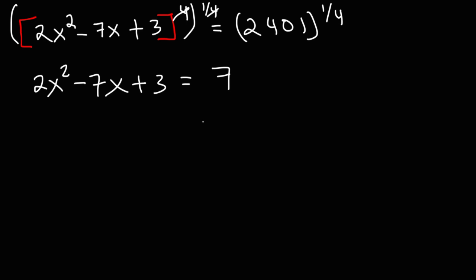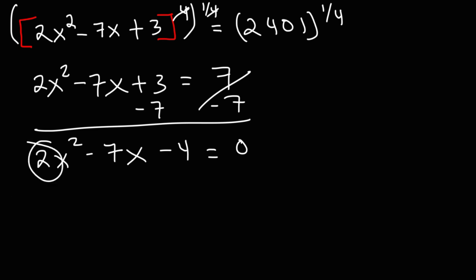Now our next step to solve this equation is to subtract both sides by 7. So we're going to have 2x squared minus 7x minus 4 equals 0. So what we now have is a quadratic equation, a trinomial where the leading coefficient is not 1. What do you think we need to do here?